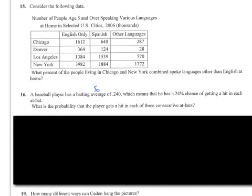Okay, number 15, consider the following data. Number of people age five and over speaking various languages at home in selected U.S. cities in 2006. So we have Chicago, Denver, L.A., and New York. We have English only, Spanish people, and other languages.